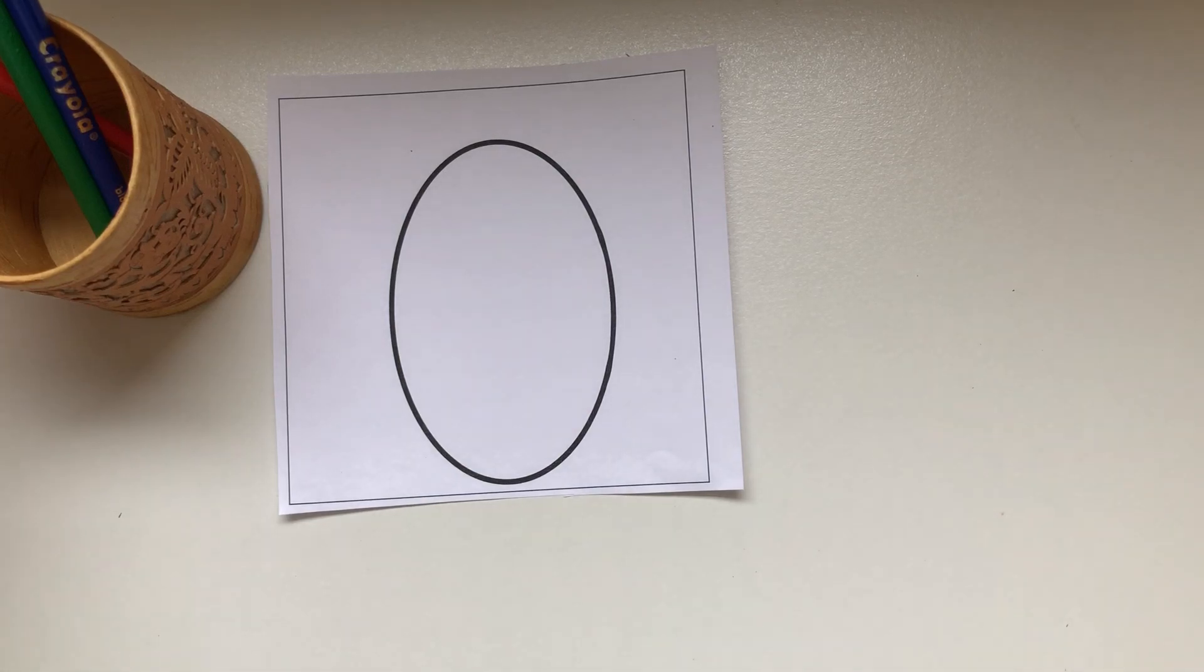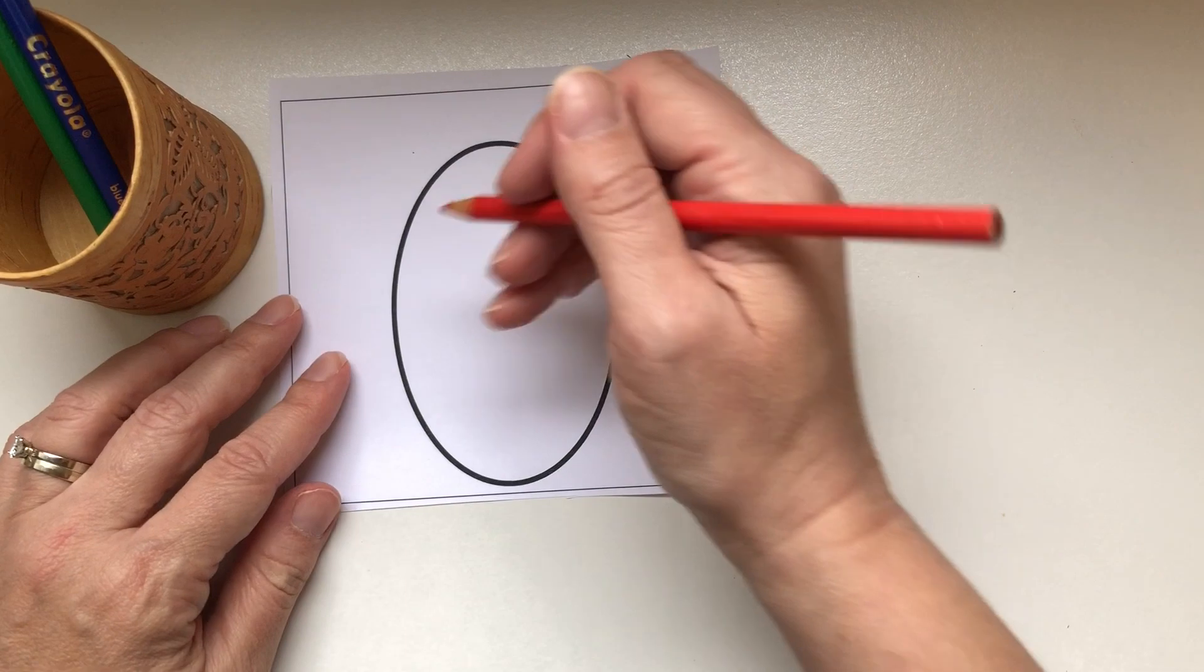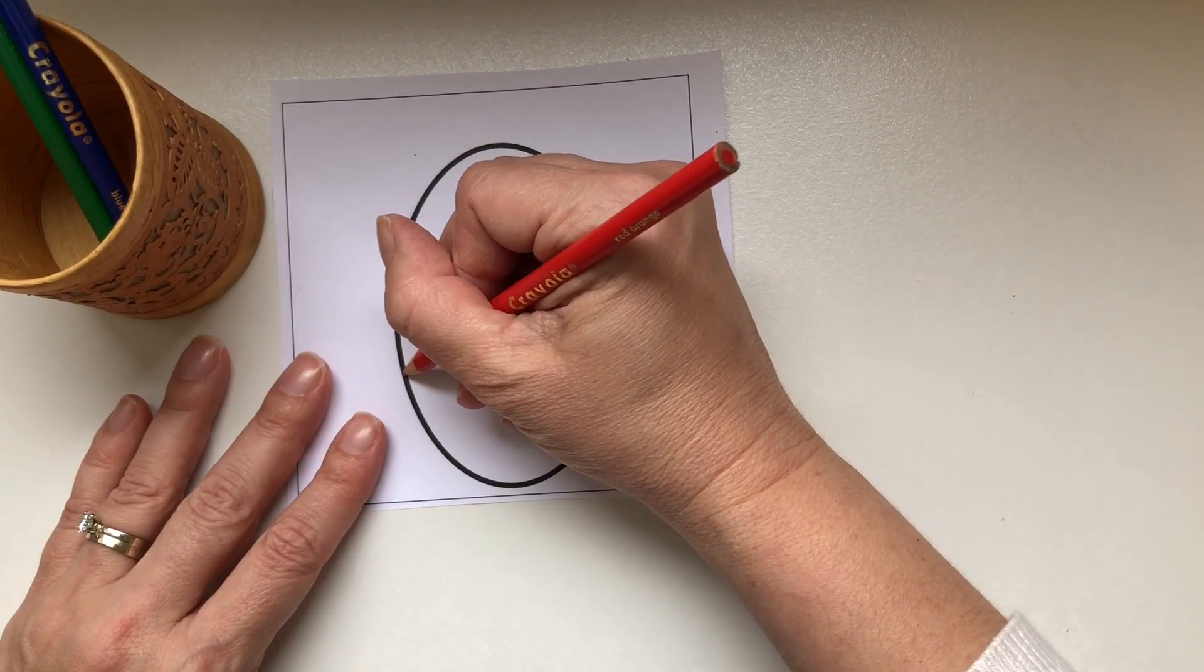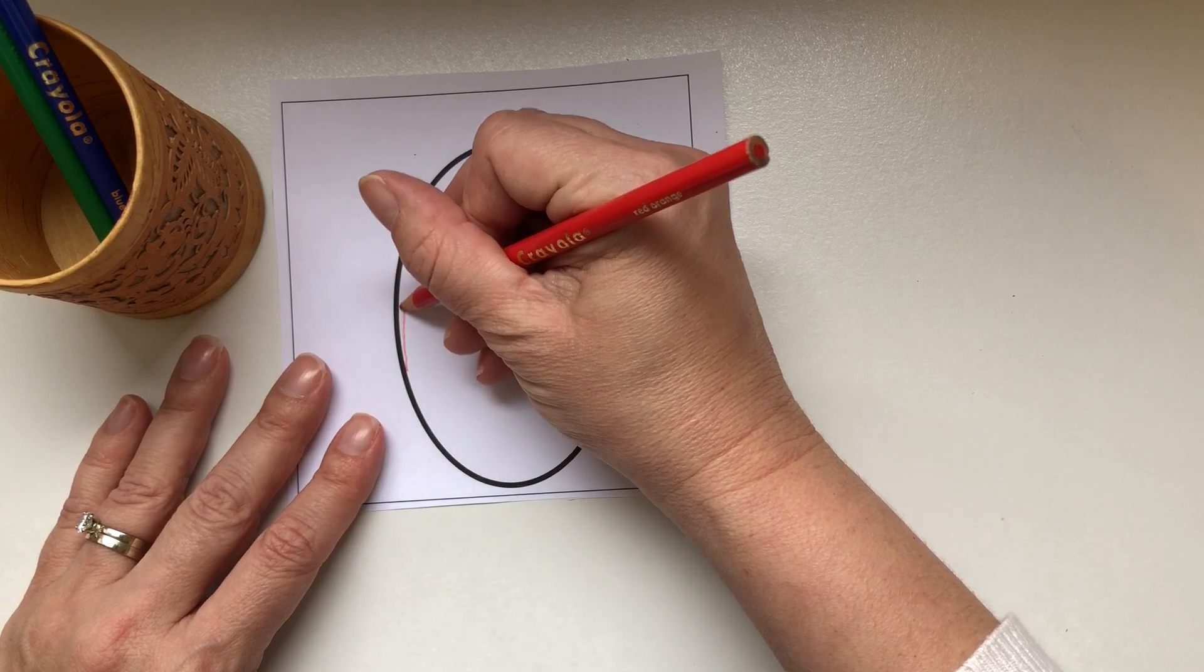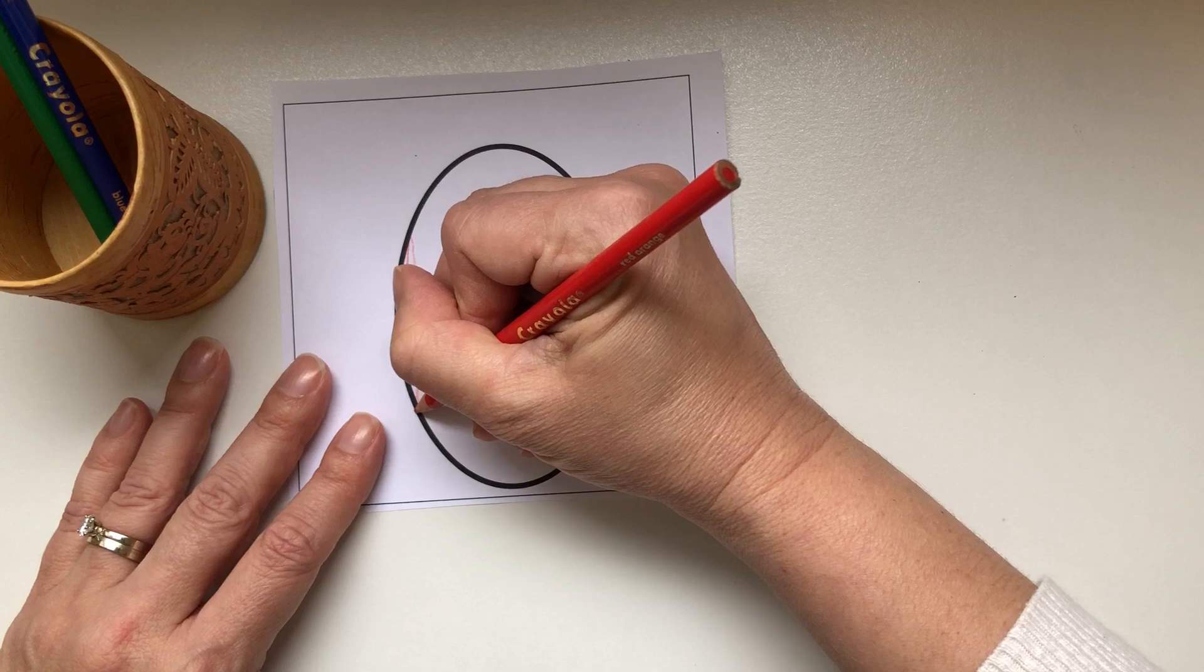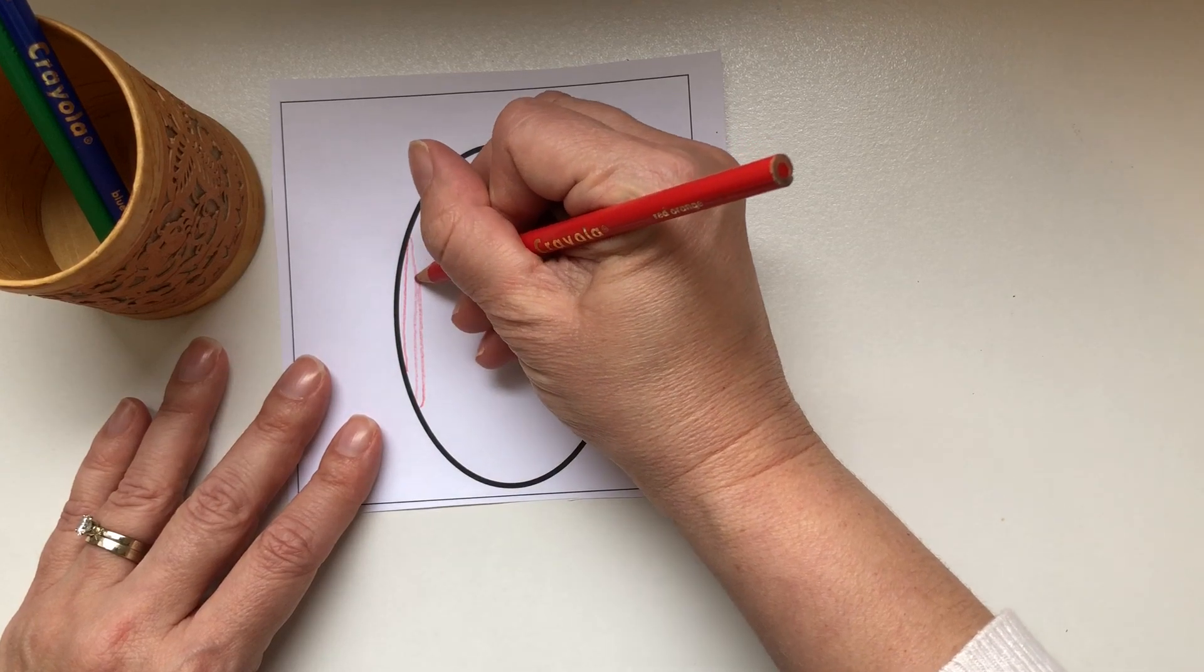So we would introduce the serpentine line. This is a line that goes up and down, left to right. So we show them how to go up and come down, touch the bottom, and curve back up again.